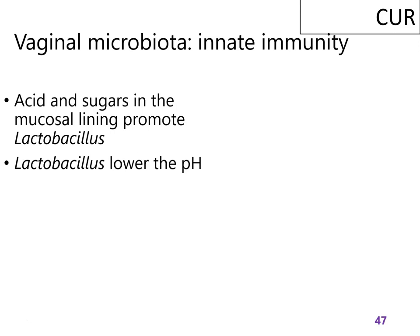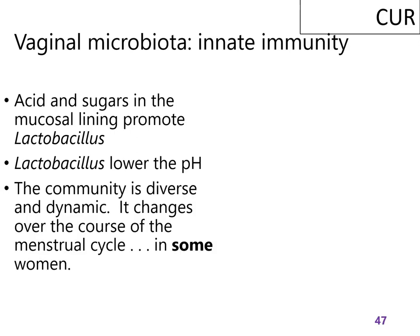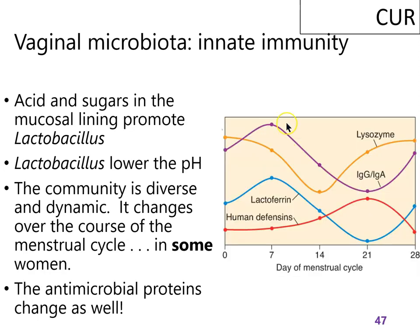The Lactobacillus will typically drive down the pH even further, which protects the vagina from many potential pathogens. What people end up with is a diverse community of different Lactobacillus species, and within those species, multiple strains. That community changes regularly over the course of a menstrual cycle, partially driven by what is provided from the host mucosa.